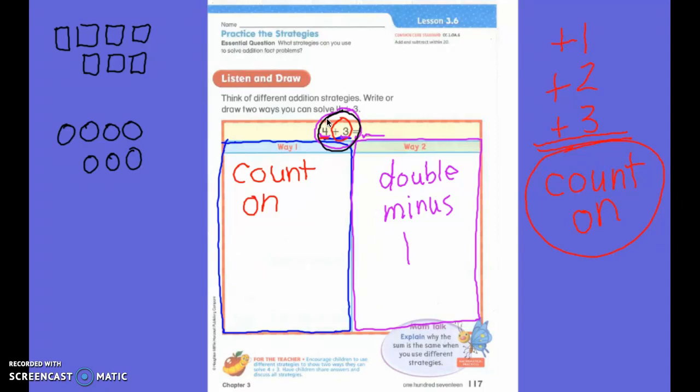Someone also said I could switch the addends, which is exactly true. If you knew 3 plus 4 equals 7, then should you know 4 plus 3 equals 7? Absolutely. So we could switch it if you knew what 3 plus 4 is. Also, I saw that someone said you could use the number line, which is exactly true. The kind of part of our count on strategy is by using the number line.